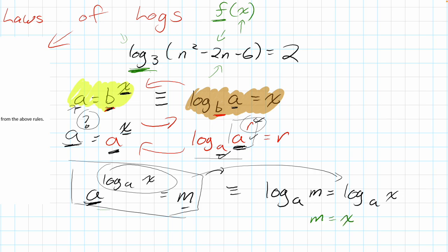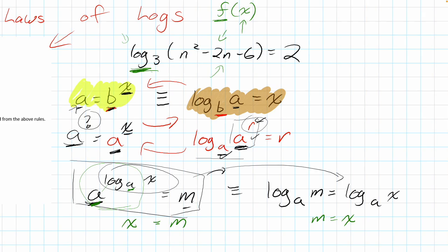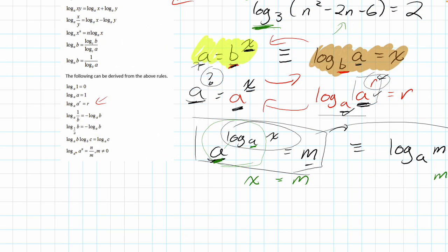Since log base a of M equals log base a of x, that tells us M must equal x. So we've done a proof: if we have a base with an exponent that is a log of the same base, they cancel out and we're just left with the argument. Similarly, log base a of (a to the power R) just gives us R. You don't have to memorize the proof process — just remember the outcome.